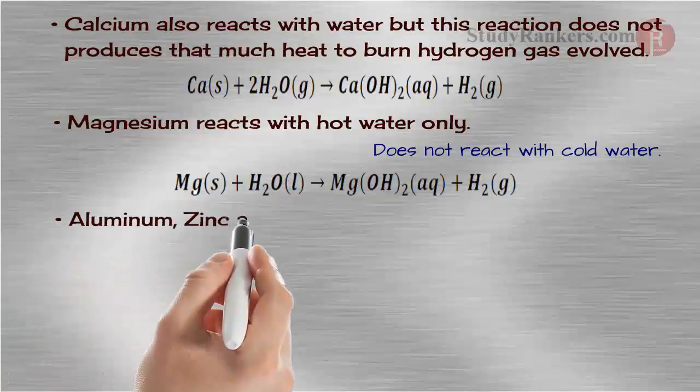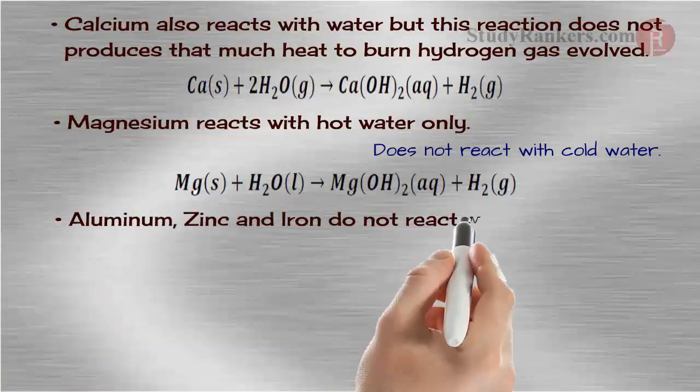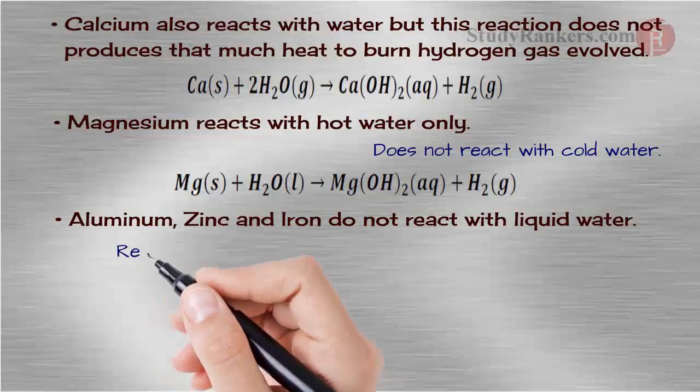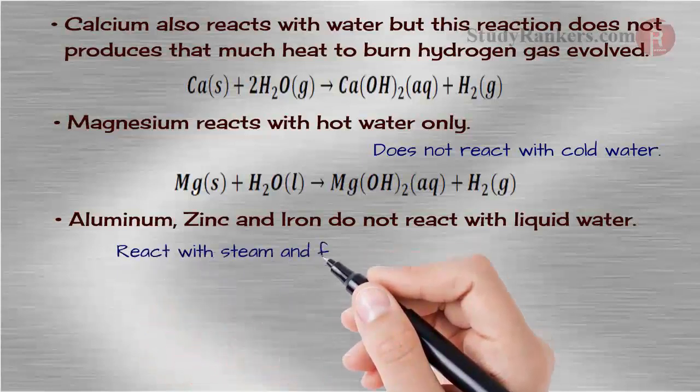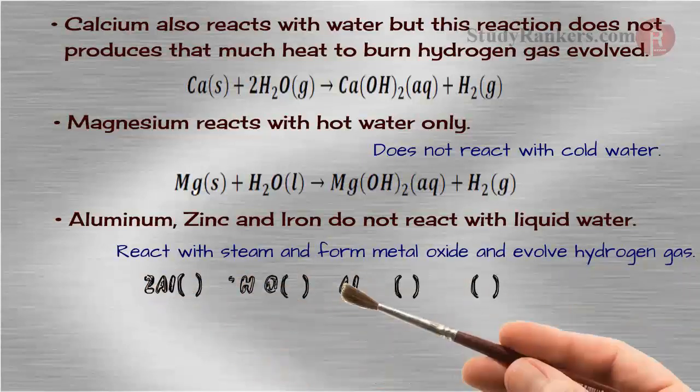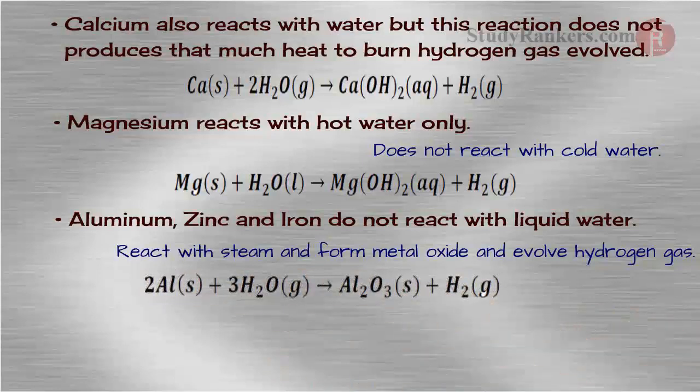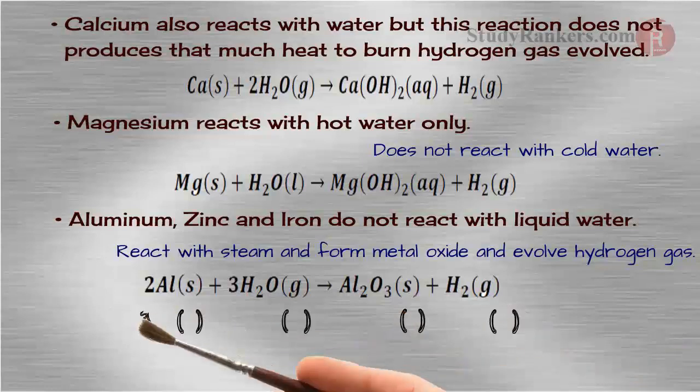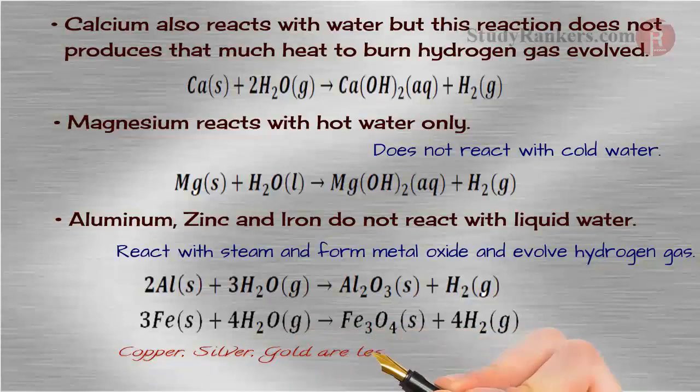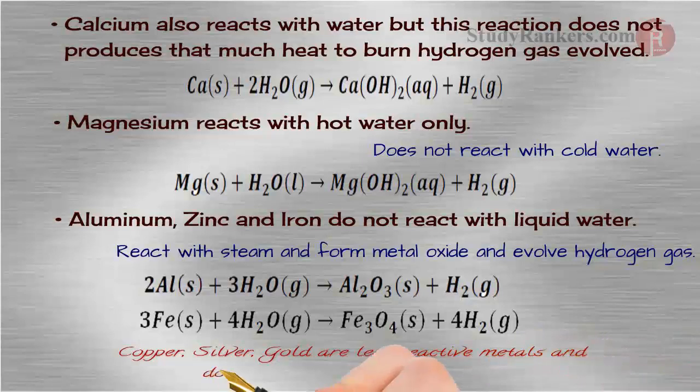Aluminum, zinc, and iron do not react with liquid water. They react with steam and form metal oxide and evolve hydrogen gas. When 2Al react with 3H2O, that will give Al2O3 plus H2. Also, when 3Fe react with 4H2O, that will give Fe3O4 plus 4H2. Copper, silver, gold are less reactive metals and do not react with water at all.